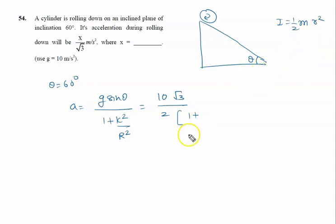So k squared upon r squared is written as 1 by 2. Finally, it is 10 root 3 upon 2 into 3 by 2. The 2s cancel, so finally it is 10 by root 3. If we compare with x by root 3, the value of x will be 10. The right answer to question 54 is 10.